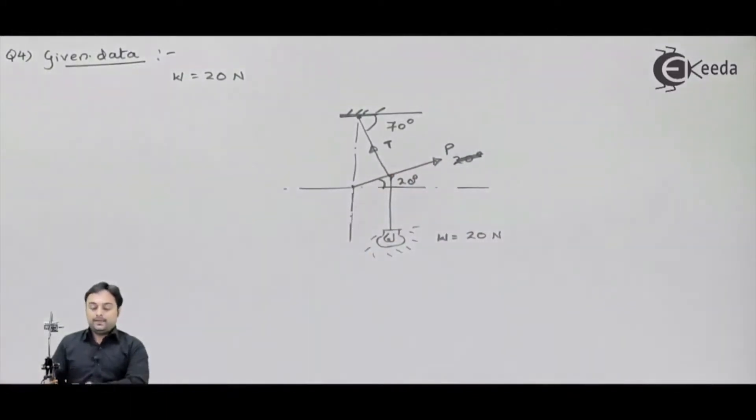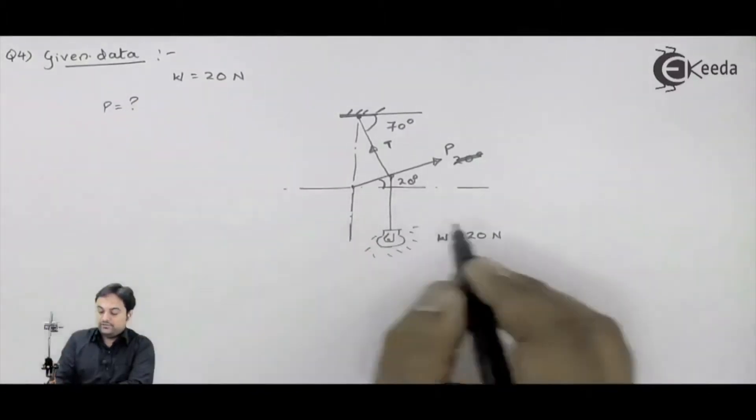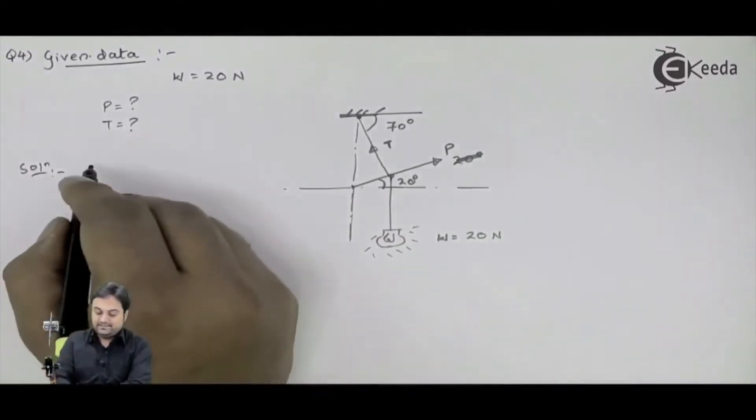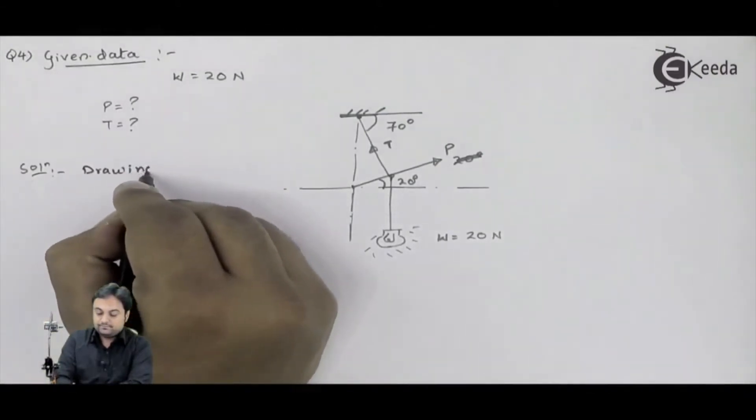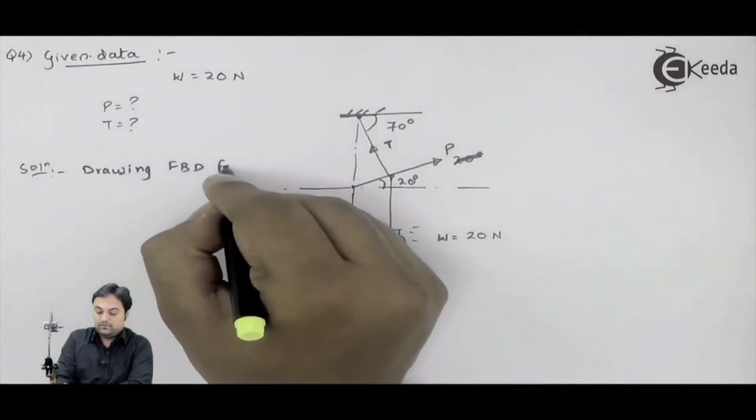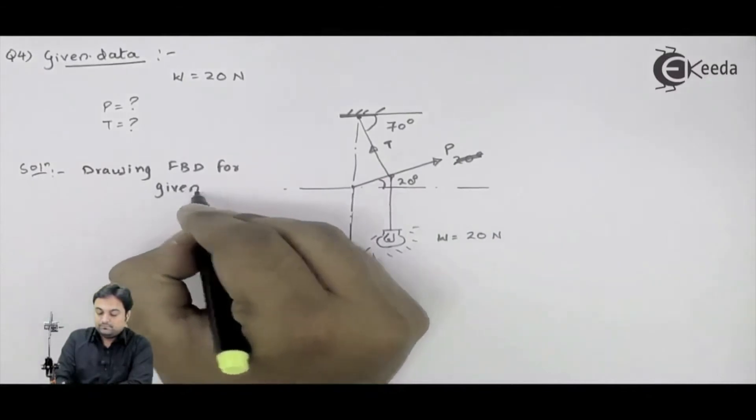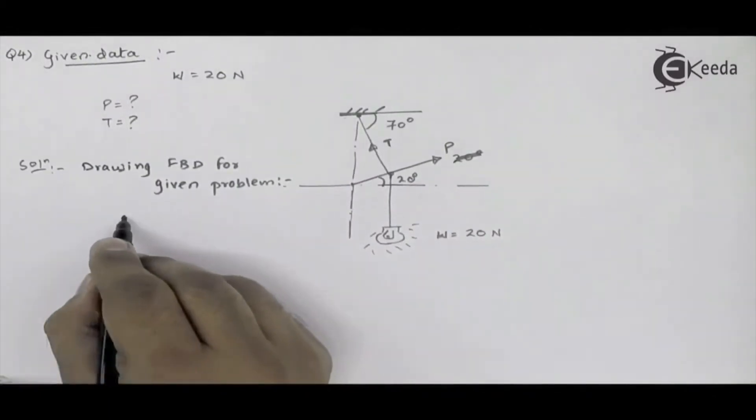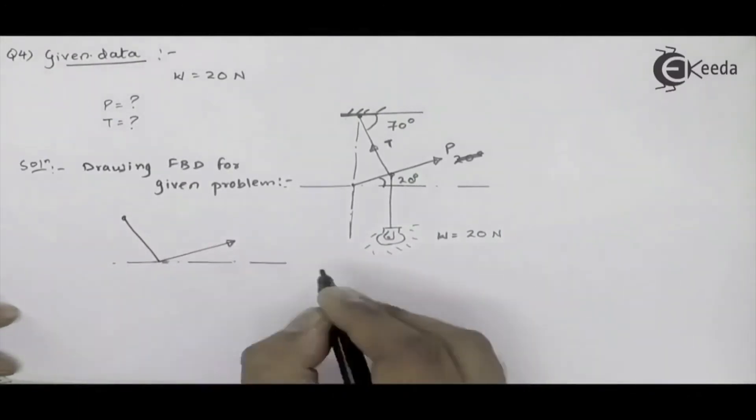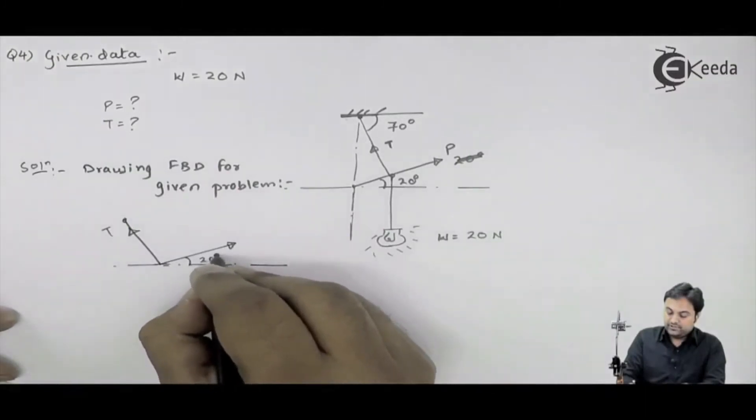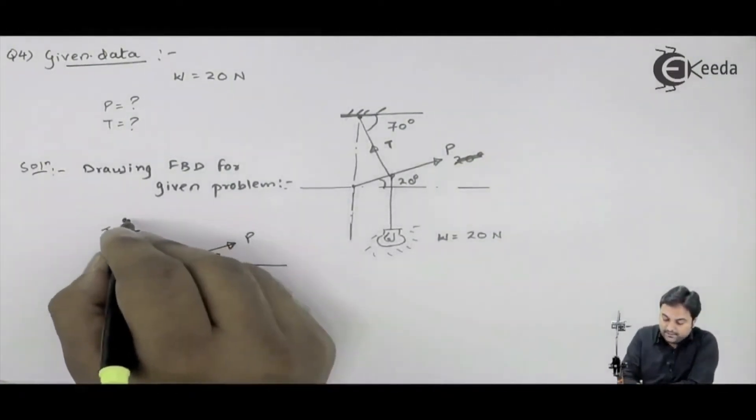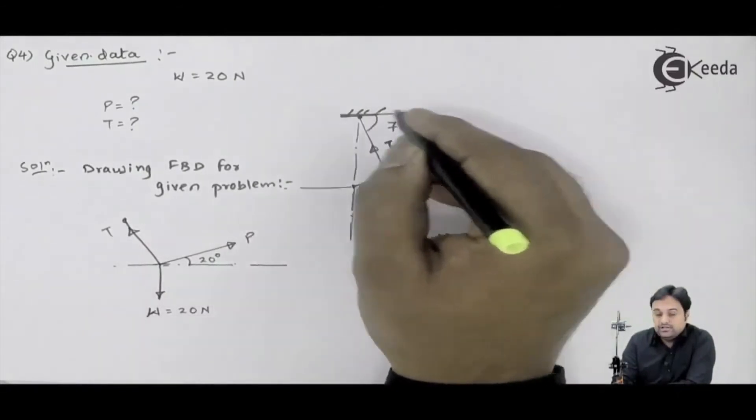Now, with these conditions given, you have to calculate P and you have to calculate T. So let us start this problem. I will say that drawing FBD for given problem. For FBD remove the ceiling. Force is inclined at 20 degrees, given in the problem. Load is 20 Newtons.